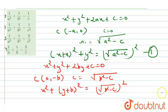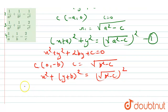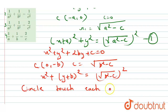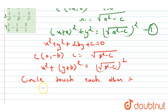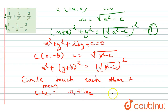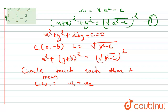Since the circles touch each other, the condition is that c1c2 equals r1 + r2. We now solve using this condition.